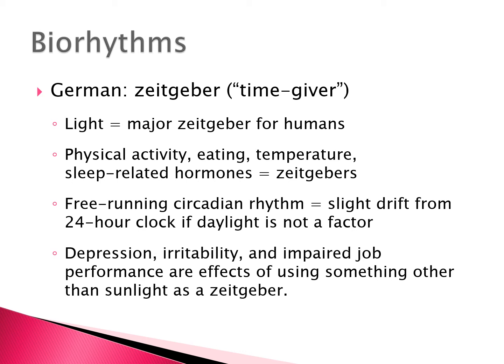Things that affect these biorhythms are called zeitgebers — German for 'time giver.' Sunlight is a major zeitgeber for land animals; tides are a stronger zeitgeber for marine animals. Other zeitgebers include physical activity — you probably want to exercise early in the day rather than in the evening, as it tends to keep you awake. Eating, temperature, and sleep-related hormones are also zeitgebers. We have a free-running circadian rhythm with a slight drift from the 24-hour clock when daylight is not a factor, as seen with submarine workers and people in Antarctica.